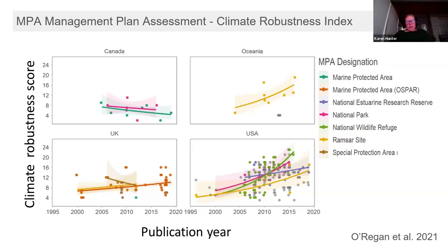We also looked at the CRI over time for four countries with sufficient data to conduct a trend analysis. While the majority showed evidence of increasing incorporation of climate change adaptation principles in their management plans over time, this was not consistent across countries or MPA designations. In 2023, an author team led by Lubachansky showed that there is indirect consideration of climate change in MPA planning, but consistent formalization of actions in planning remains incomplete. These results gave our team plenty of reasons to ask and investigate additional questions related to climate change planning for biodiversity conservation.